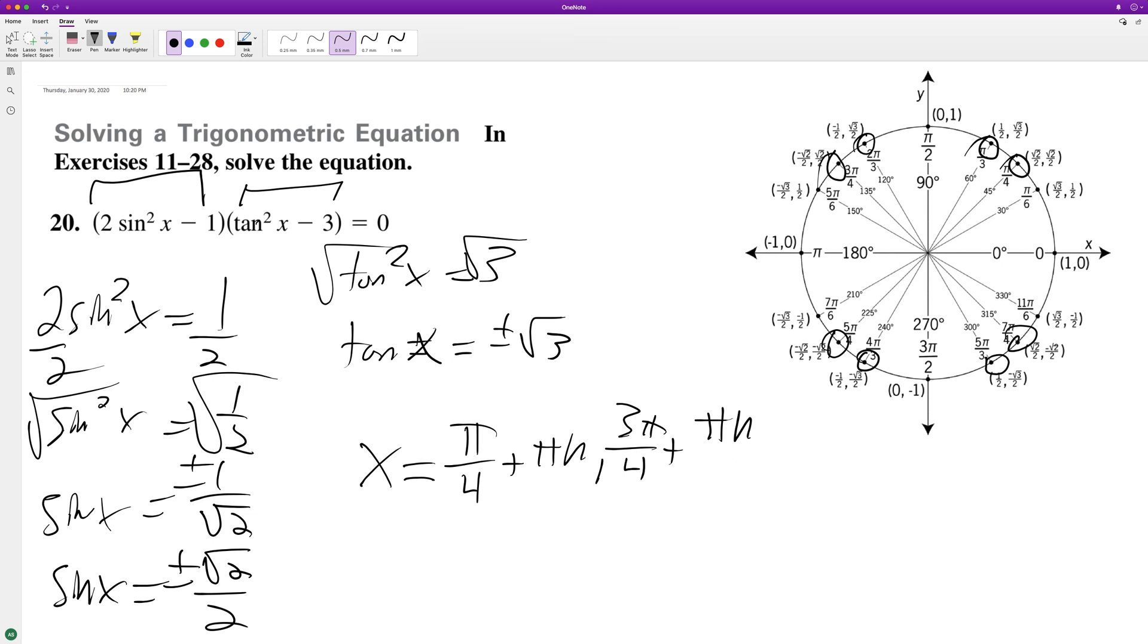And then we're going to have the next one covering the tangent, which is going to be pi over 3 plus pi n, and then 2 pi over 3 plus pi n. And that's it.